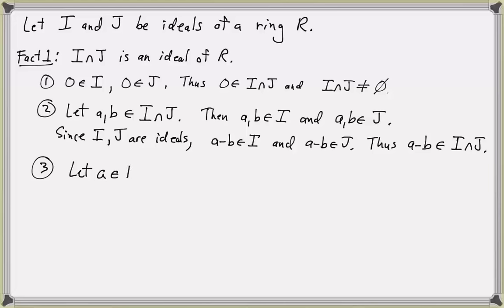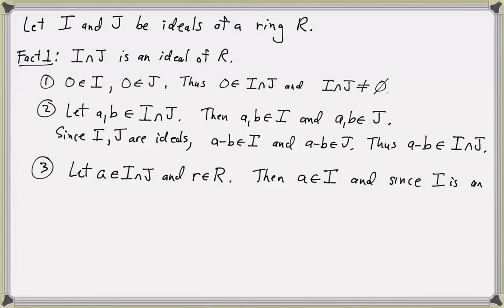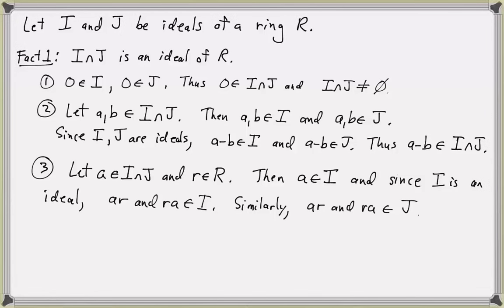Let a be in I ∩ J and let r be an element of the ring R. Then a is an element of I, and since I is an ideal, ar and ra are elements of I. Similarly, ar and ra are elements of J. Therefore ar and ra are in I ∩ J, which shows I ∩ J is an ideal of R.